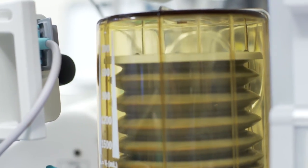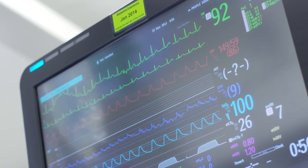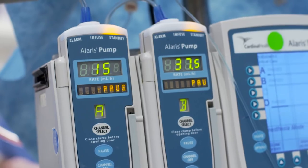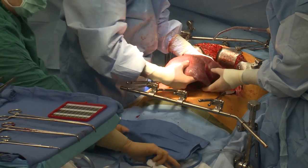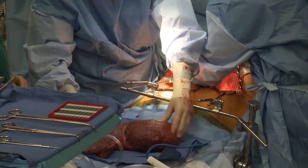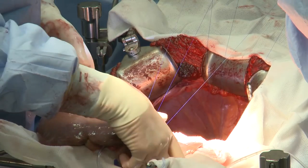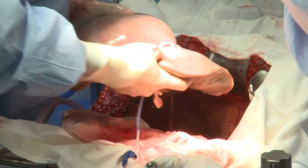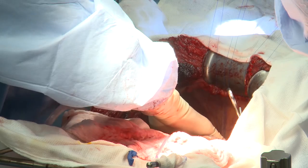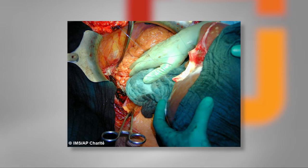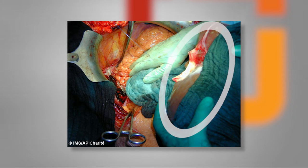The entire liver transplant surgery usually takes between 4 to 6 hours to complete. There are two main phases. Number one is the recipient hepatectomy, which involves the removal of the recipient's cirrhotic liver. The second portion of the operation involves implanting the new donor liver into the recipient, which can take 2 to 2 and a half hours to complete. These are some real live photos of the surgical steps of the transplant. You can see the recipient liver has already been removed, and in the foreground the new liver is about to be implanted, attached by suture, with the upper caval anastomosis about to be performed.